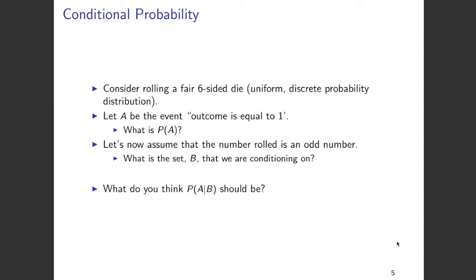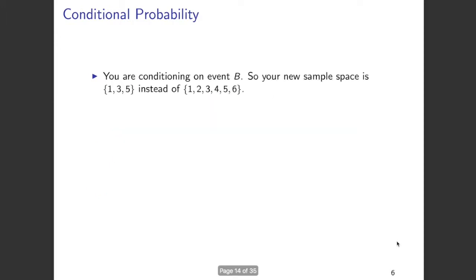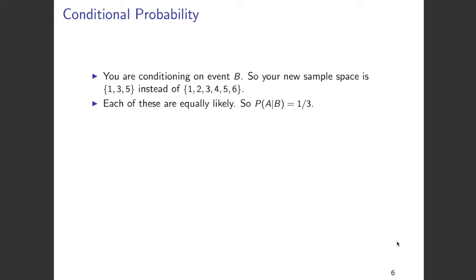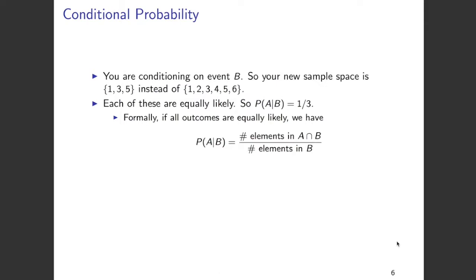What we have to find in this example is P(A|B), the conditional probability of A given B. We are conditioning on event B, so our new sample space is {1, 3, 5} instead of {1, 2, 3, 4, 5, 6}, because B is the event that the number rolled is odd. Each of these outcomes is equally likely — the probability of getting a 1, 3, or 5 is equally likely. The probability of A given B is 1/3, because A is the event that the outcome is 1, and getting 1 out of {1, 3, 5} gives us 1 out of 3 options, hence 1/3.